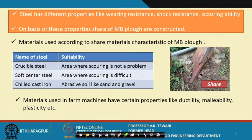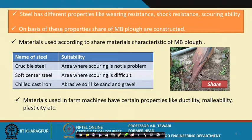Let us see different types of steels and their suitability. Crucible steel is used in areas where scouring is not a problem; soft-centered steel is used where scouring is difficult; chilled cast iron is used in abrasive soils like sand and gravel. Materials used in farm machines also have certain important properties like ductility, malleability, and plasticity, which are needed at various points — that is why proper material choice is one of the most important considerations for an engineer.